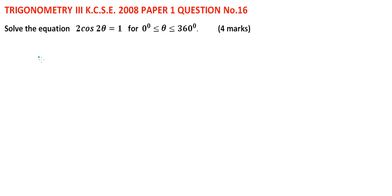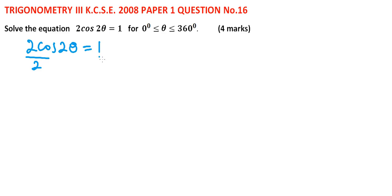We have the equation 2cos(2θ) = 1 for θ between 0 and 360 degrees. We solve it by dividing both sides by 2, so that cos(2θ) = 1/2.